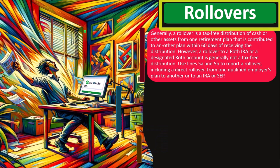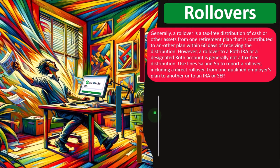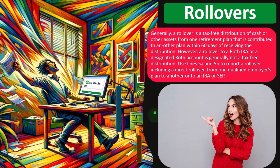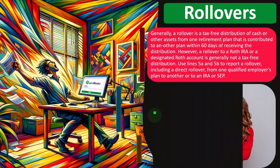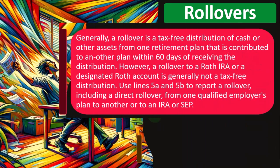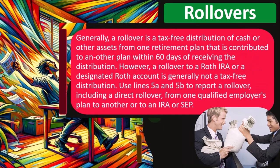Rollovers: Remember that a rollover is a situation you want to make sure to identify and inform people of if they're going from one job to another and they have a retirement plan with one of those jobs and they don't want to pull the money out but roll it over. Generally, a rollover is a tax-free distribution of cash or other assets from one retirement plan that is contributed to another plan within 60 days of receiving the distribution.